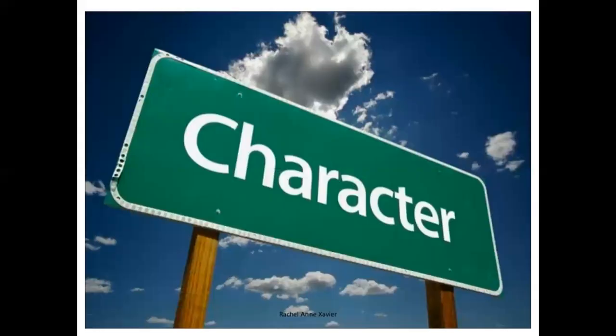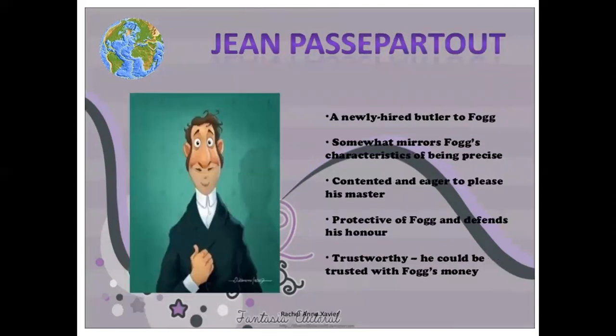The main characters are Phileas Fogg. He was a wealthy man in his forties. He was a very punctual man who follows routine. He was determined to win the bet. He was quite calm and stayed collected throughout the story and never panicked. Next is Jean Passepartout. He was newly hired by Phileas Fogg and had a similar character. He always wanted to please his master and tried his best to take care of his every wish.